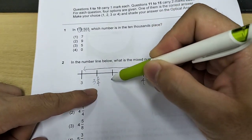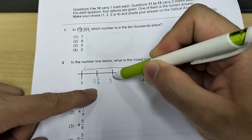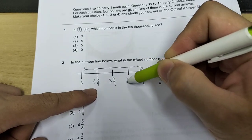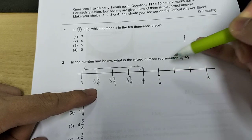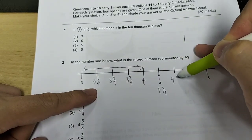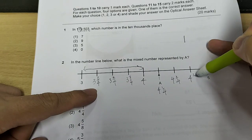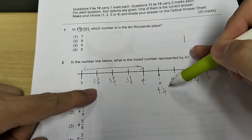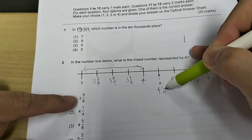So this will be 3 and 1 quarter, 3 and 2 quarters, 3 and 3 quarters, 4 whole, 4 whole and 1 quarter, 4 whole 2 quarters, 4 whole 3 quarter and 5. So the answer for A will be 4 whole and 1 quarter.